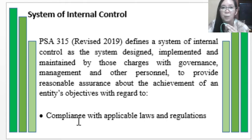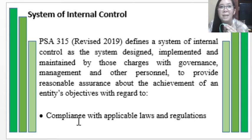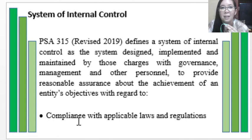Another importance of having internal control is that the entity will make sure they comply with applicable laws and regulations. Someone may be assigned the task of reporting and preparing the necessary requirements for compliance with those laws and regulations which the entity is bound to follow. Additionally, there is also someone who checks that everything was done accordingly and properly.